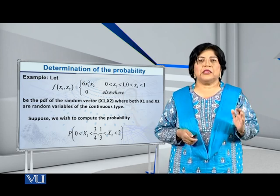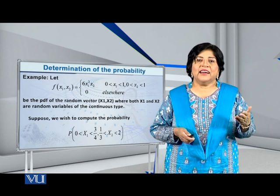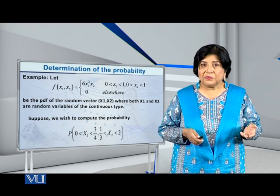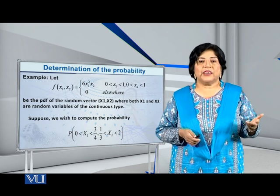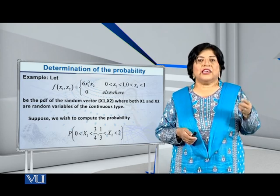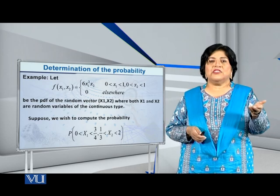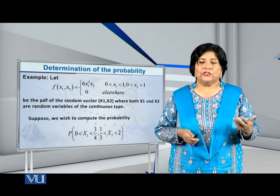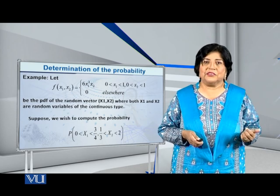The first thing we should check: is it really a PDF? You should integrate 6x1² · x2 with respect to x1 and x2 over the entire domain and verify it equals 1. You can check it yourself. Assuming that it is a valid PDF, let us now try to find the required probability.